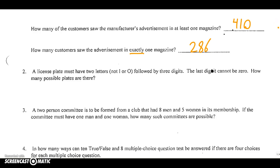Here's where we start getting into the good stuff. A license plate must have two letters, not I or O, followed by three digits. The last digit can't be zero. How many possible plates are there? The easiest way to do this one is to do counting principle. You'll notice we're supposed to have two letters and three digits. So I'm going to put five blanks.